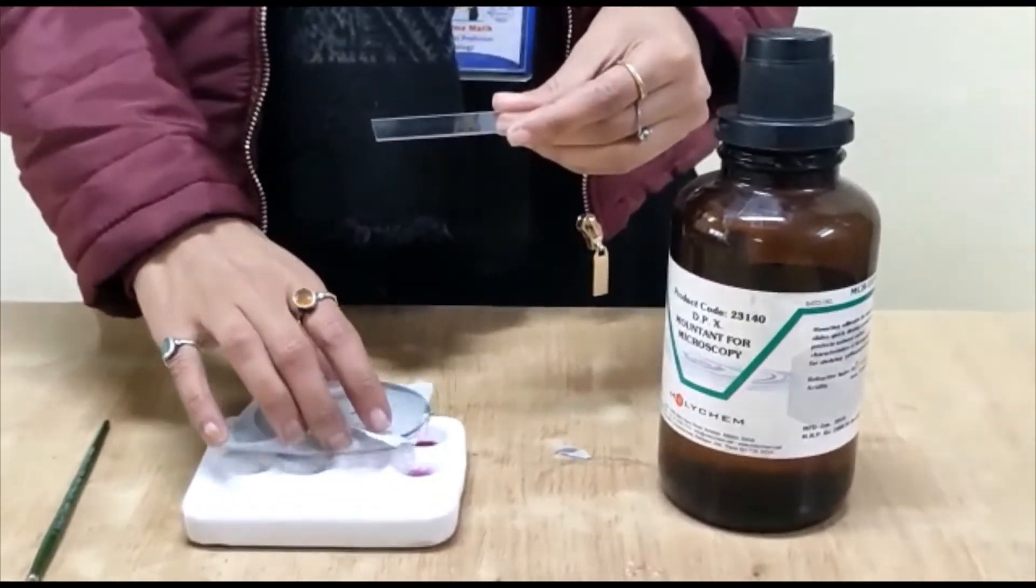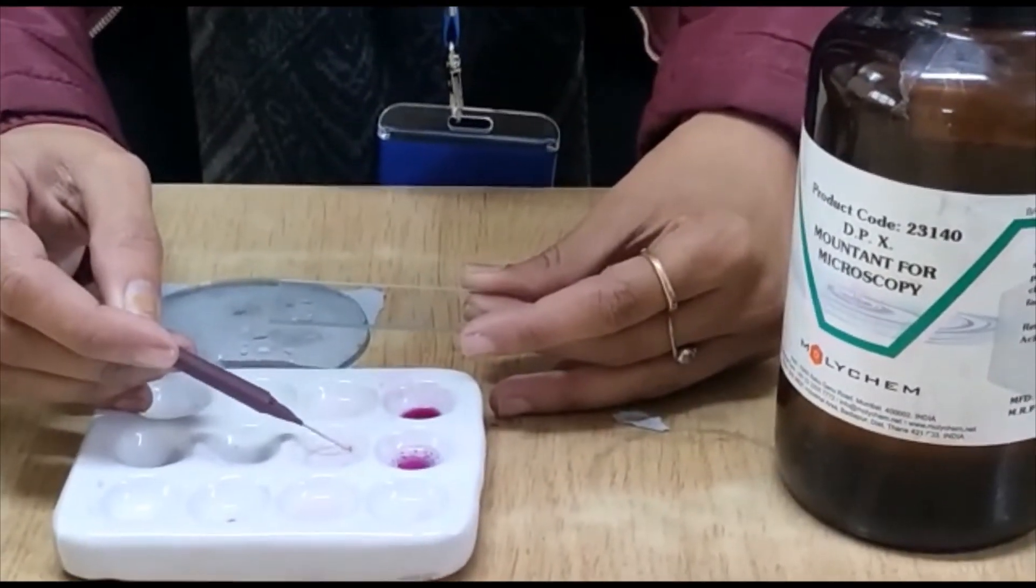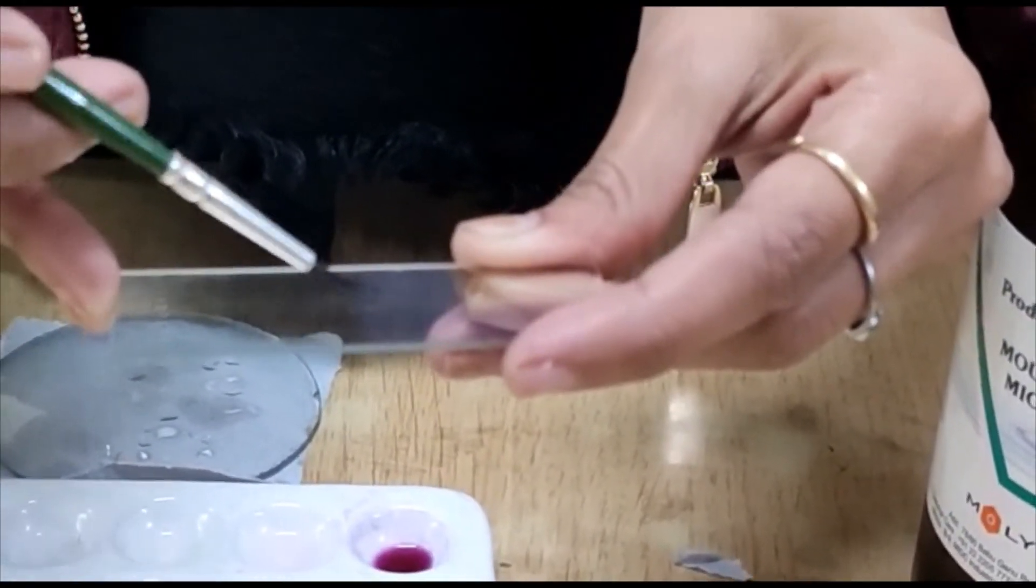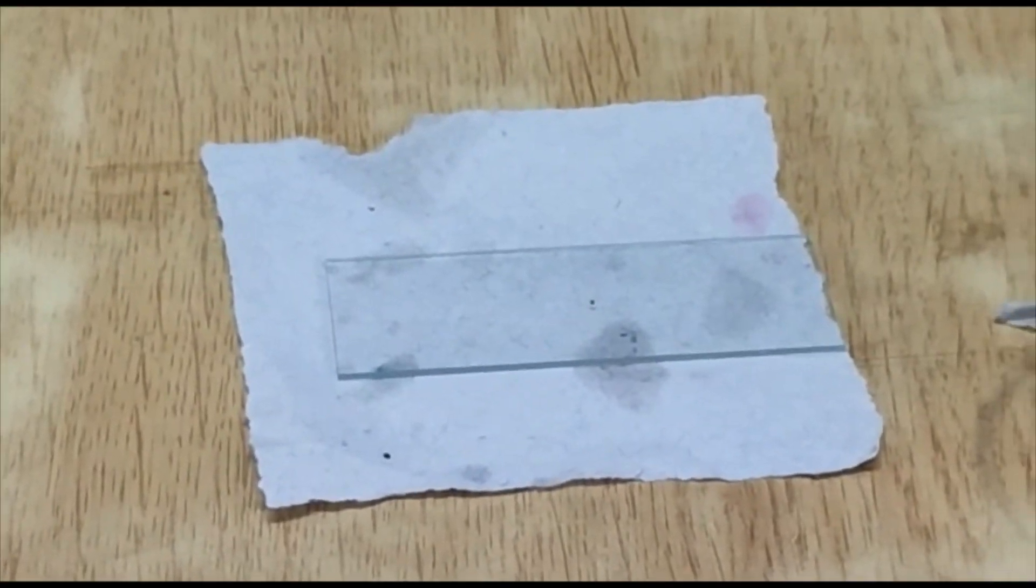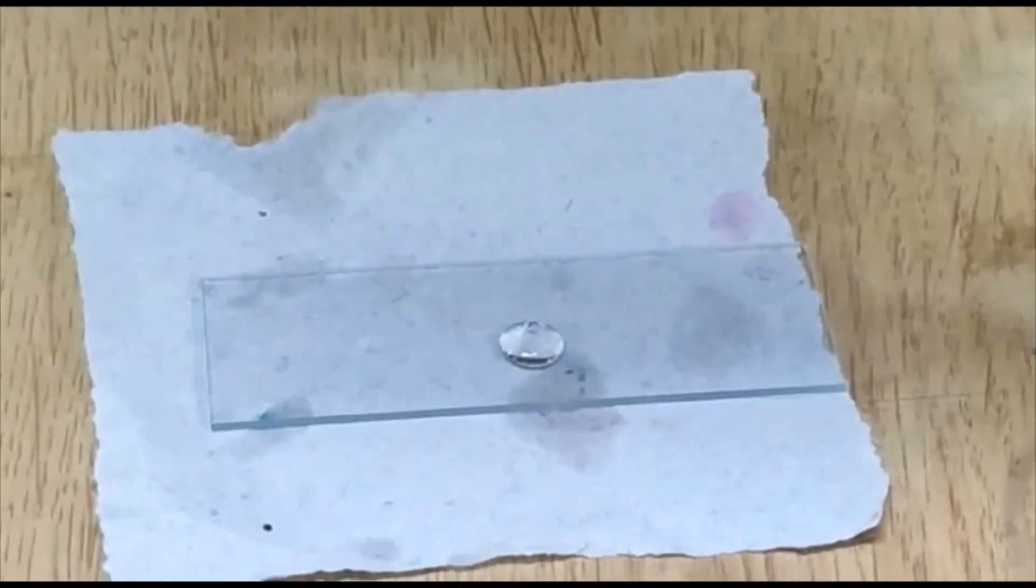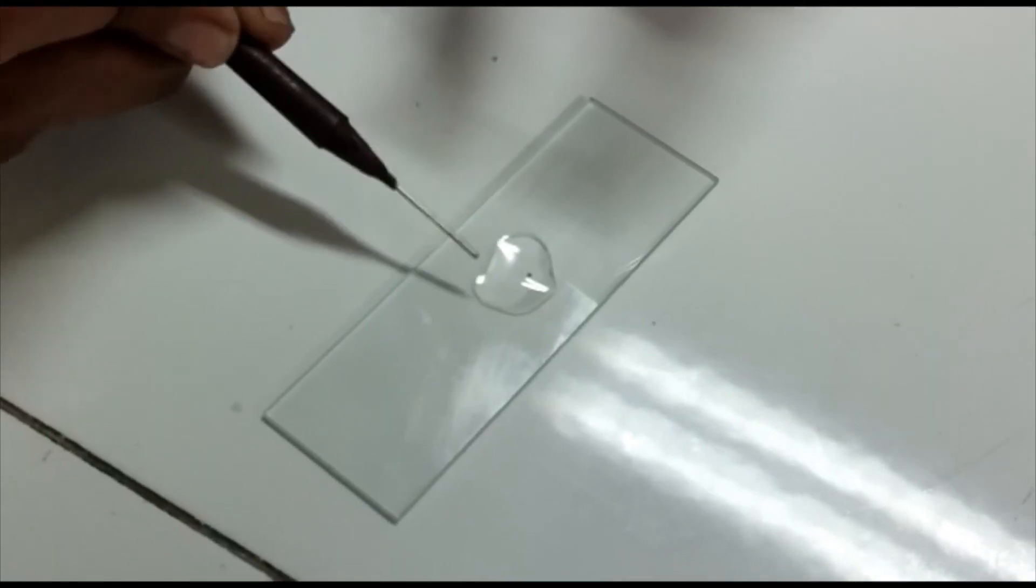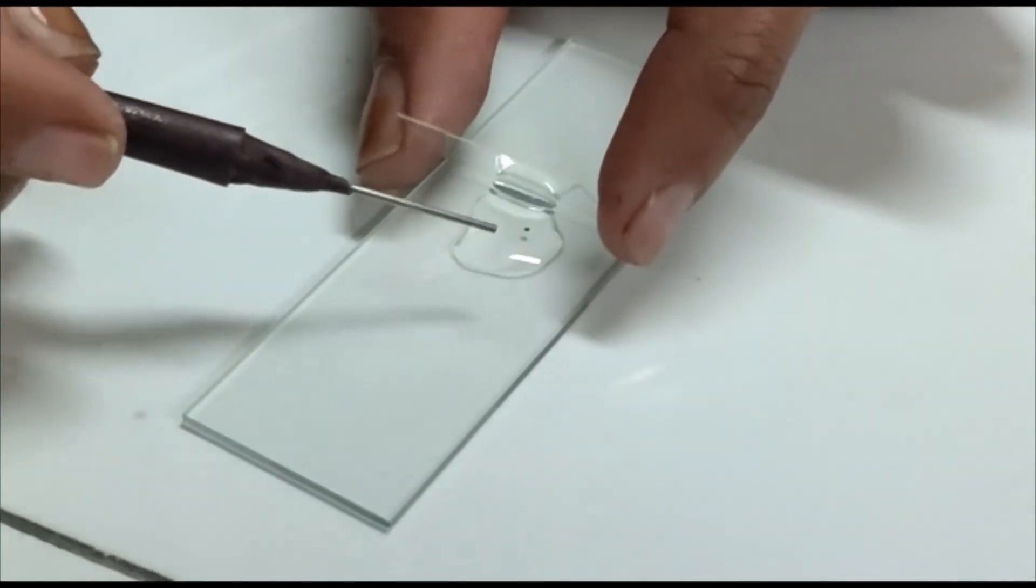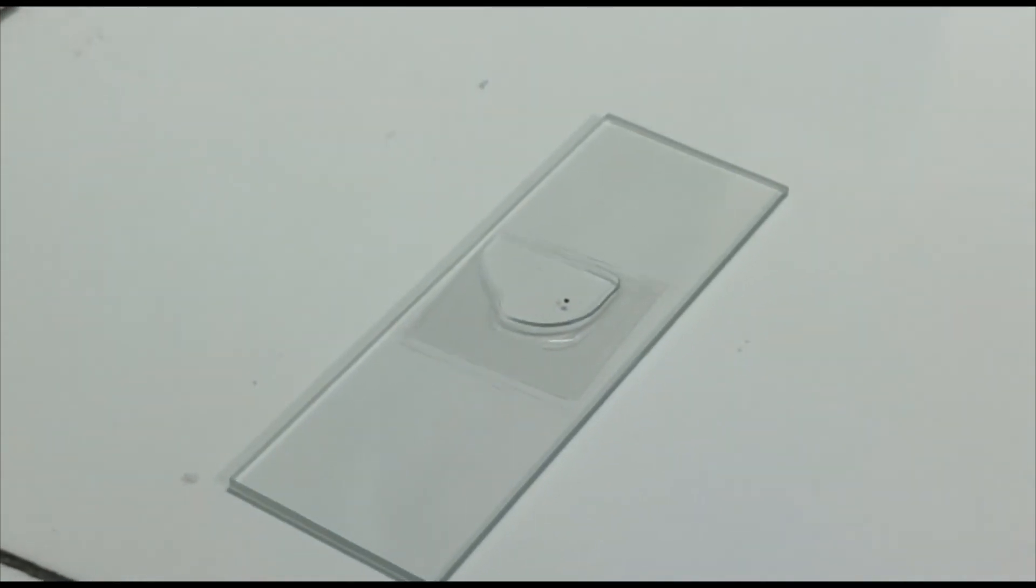Finally, we are going to take our gemmules onto a clear slide. Place them gently on the slide at the center of the slide with the help of the brush or needle. As you can see here, here is our gemmule. Now give a drop of DPX on it. And finally, place a cover slip. We need to take care that no air bubble is formed. Gently place the cover slip with the help of the needle. Now observe it under the microscope.